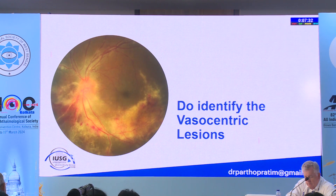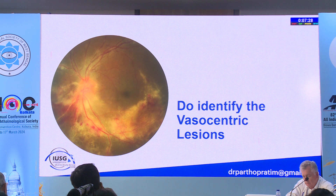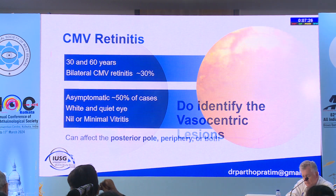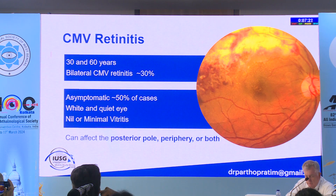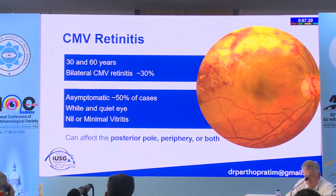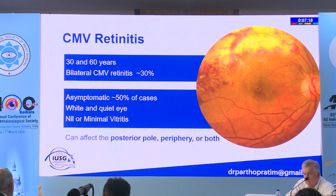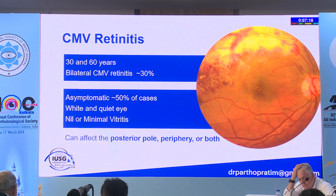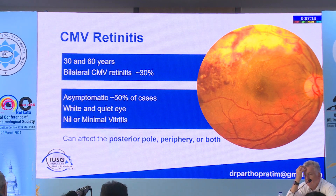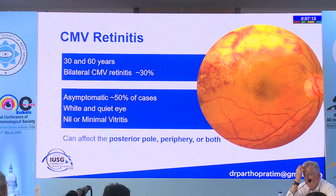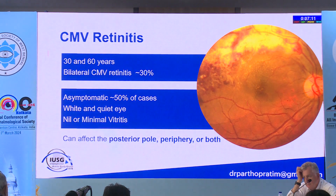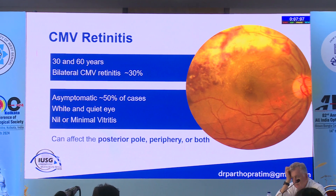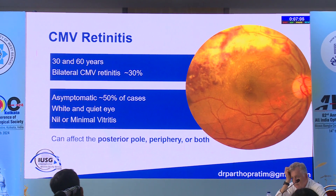When dealing with posterior viral uveitis, identify vasocentric lesions. If the lesions are vasocentric, suspect cytomegalovirus (CMV) retinitis, which can be bilateral in up to 35% of patients. These are notoriously quiet cases — sometimes there is no congestion and minimal or no vitritis. It can affect the posterior pole, the periphery, or both simultaneously.